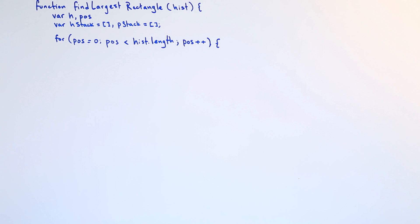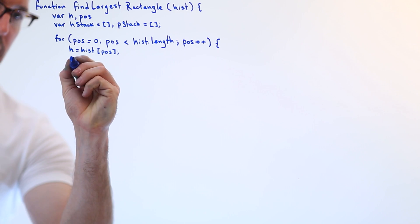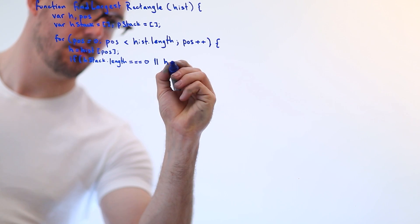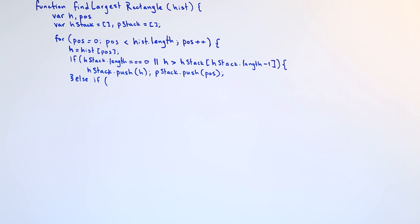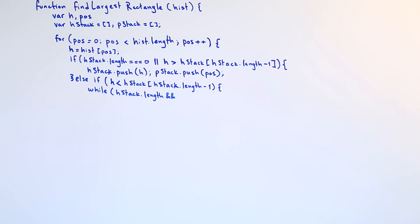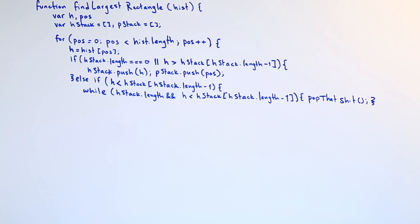Instead of using a peek method like you would in a normal stack, we'll just index to length minus one. We have two cases: either we're at the beginning of our stack or we have a value bigger than what's on top of the stack — in that case we just push the height and the position into their respective stacks. Then there's the other case: whatever we've arrived at is less than what's on top of the stack. If we're there we've got to do some real work — we need to pop that item off the stack, figure out what size rectangle it was composing, and figure out if that was the maximum.